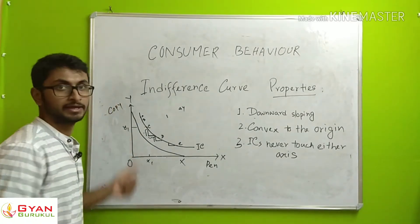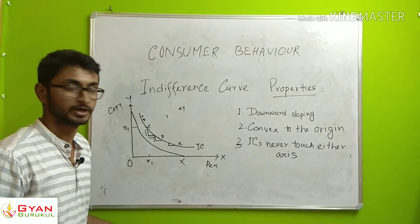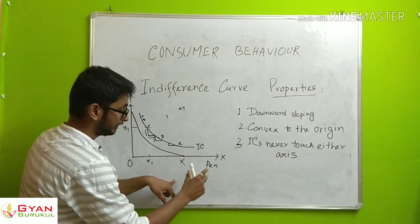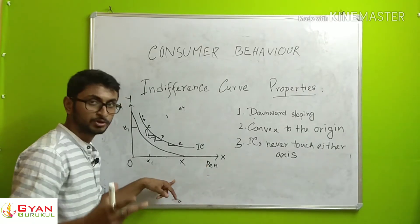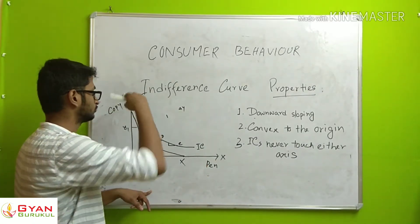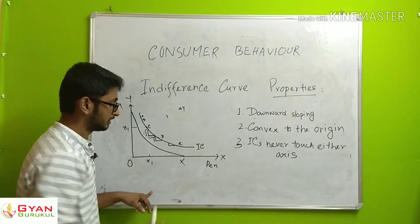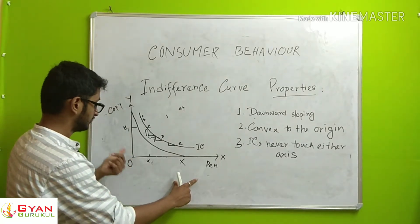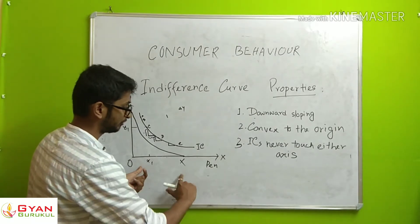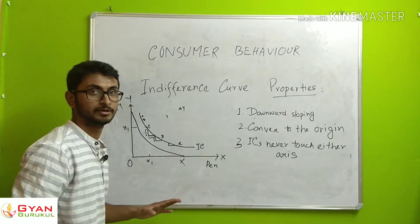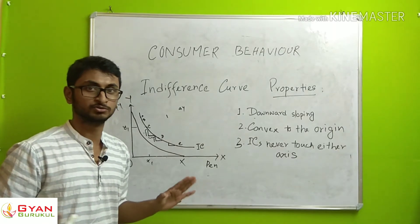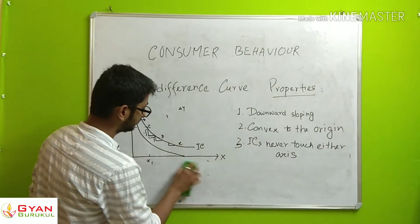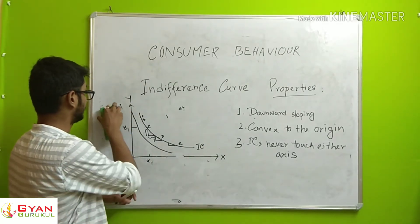If X-axis measures quantity and Y-axis is 0, that is not a valid combination. The combination requires both goods. So the indifference curve cannot touch the X-axis or the Y-axis.